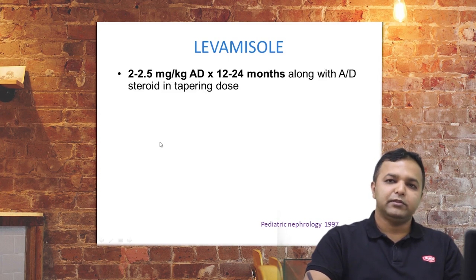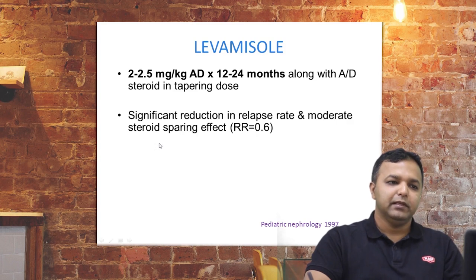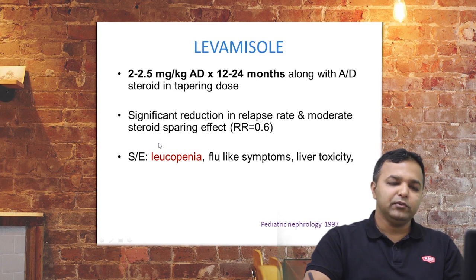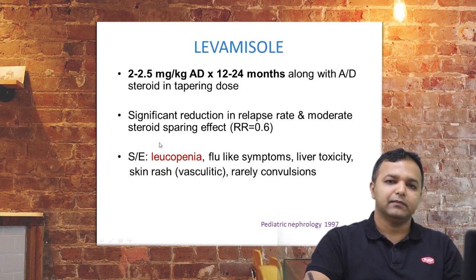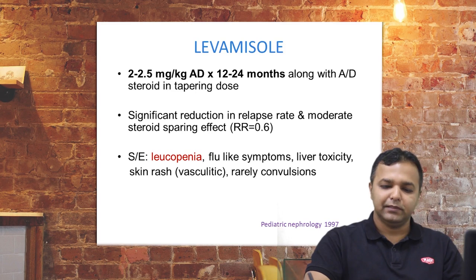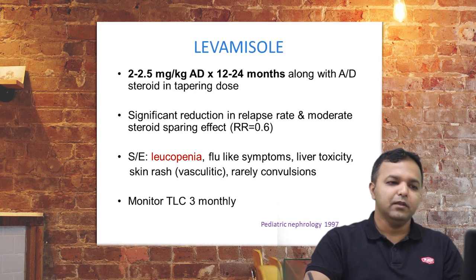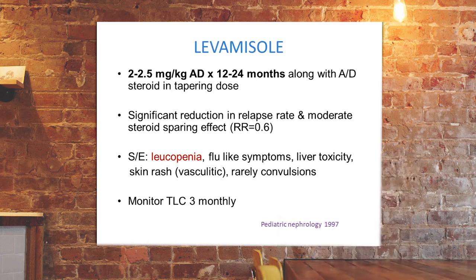Levamisole dose is 2 to 2.5 mg/kg on alternate days for 2 to 24 months, along with a tapering dose of alternate-day steroids. There is significant reduction in relapse rate and a moderate steroid-sparing effect. Side effects include leukopenia, flu-like symptoms, liver toxicity, skin rashes, and rarely convulsions. CBC should be monitored every three months during levamisole therapy.